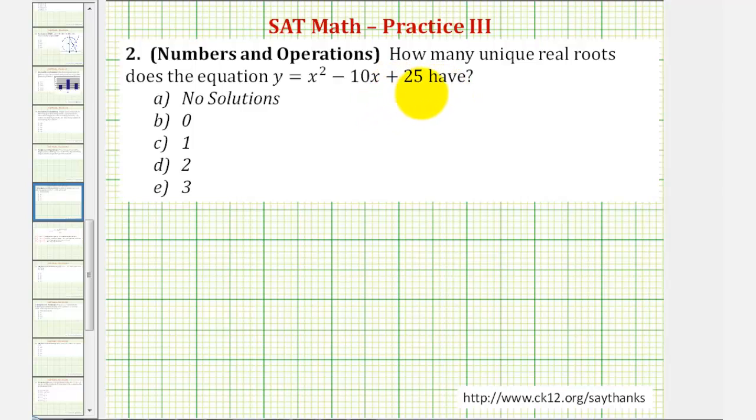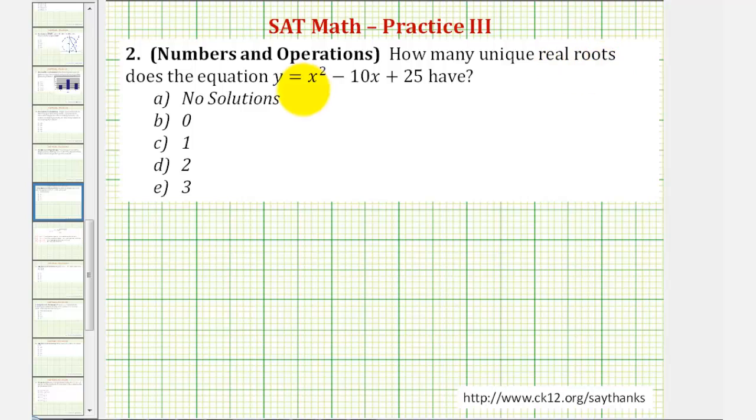There are several ways to approach this question, but the main thing to remember is that the real roots or zeros of an equation occur where y is equal to zero. So to find the real roots, we'll set y equal to zero and solve for x, which means you want to solve the equation zero equals x squared minus 10x plus 25.